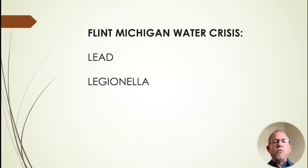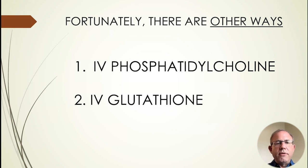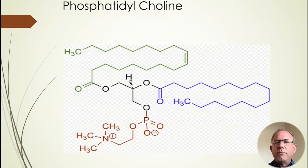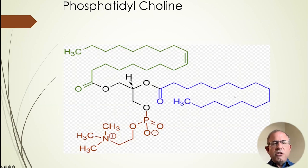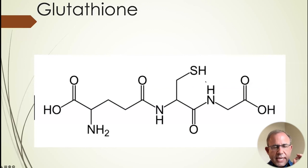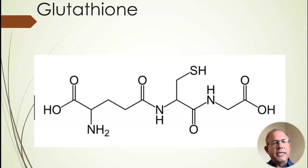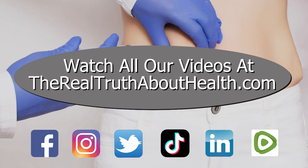Other ways to remove these toxins: at the clinic I work at, we use two IV treatments — phosphatidylcholine and glutathione. Phosphatidylcholine is a fatty structure that goes into fat cells and the brain and pushes out the fatty toxins. Glutathione is simply three amino acids stuck together; your body makes some on its own, but the amount it produces decreases with age.